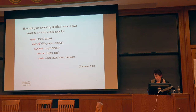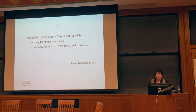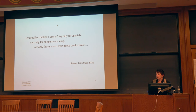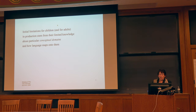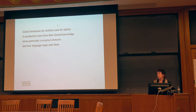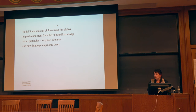Or if you consider children's very early uses of 'dog' — say, only for spaniels where there's a pet spaniel at home — or 'car' only for one particular model, or 'car' only for cars seen from above on the street (this was Lois Bloom's daughter), the initial limitations for children, and I will argue for adults in production, stem from their limited knowledge about particular conceptual domains and how language maps onto them.